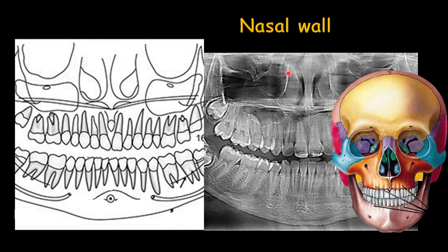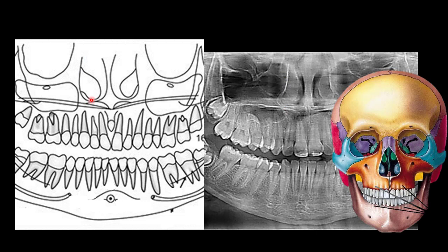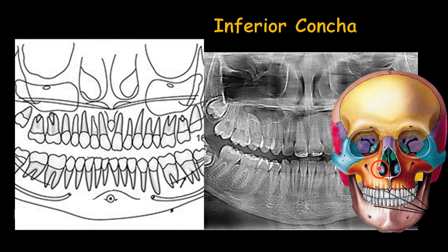The lateral wall of the nasal fossa is in contact with the medial wall of the maxillary sinus. The projections are called the middle concha and the inferior concha — you can see these in the skull. Mostly the inferior concha is seen in the panoramic radiograph, as shown in the schematic view and in this panoramic radiograph.